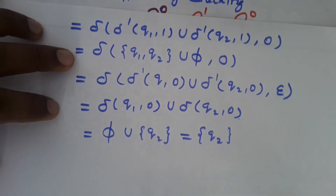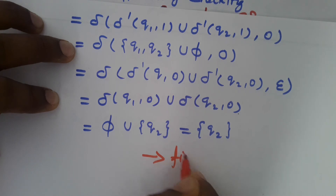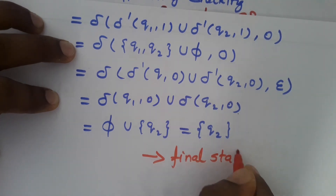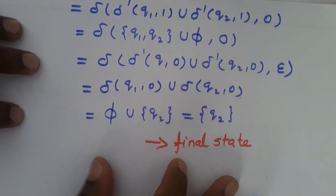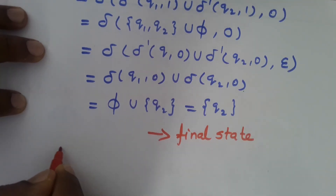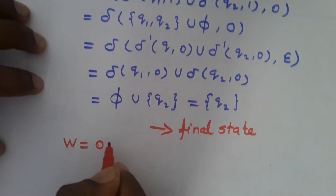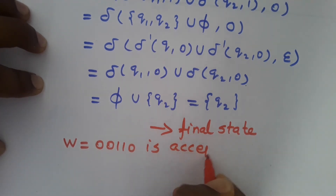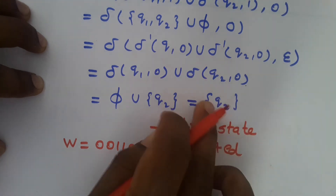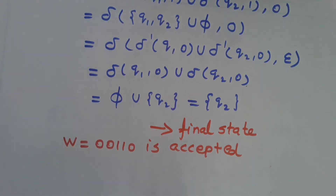Q2 is the final state. We have reached the final state at the end of the transition. So the given string W = 0, 0, 1, 1, 0 is accepted when it reaches the final state — it is accepted by the finite automata transition. Thank you for watching.